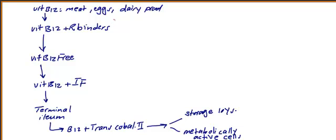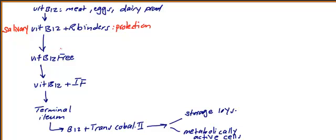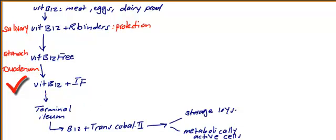Now we need to follow this diagram. First, R-binders come from the salivary gland — this is protection. R-binders protect vitamin B12 from destruction by hydrochloric acid in the stomach. Vitamin B12 free usually occurs in the stomach or duodenum.